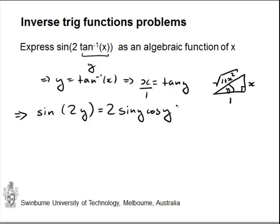We can now apply the triangle twice and get 2 times sine y, which is the opposite x divided by the hypotenuse, the square root of 1 plus x squared, times cos y, which is the adjacent divided by hypotenuse. The two square roots cancel when we simplify, and we end up with 2x divided by 1 plus x squared.